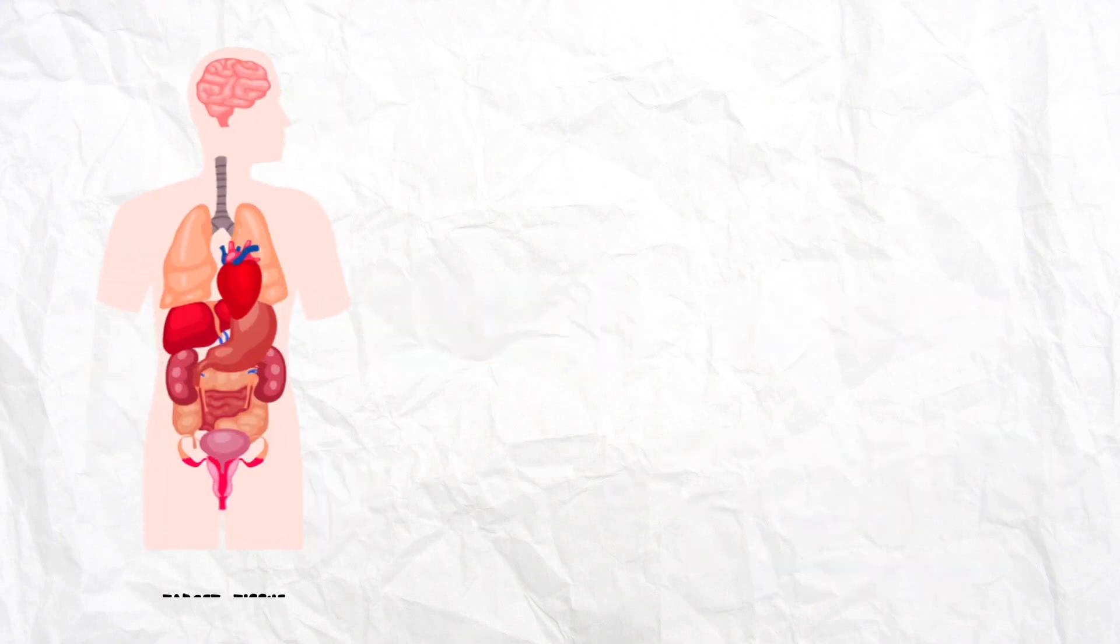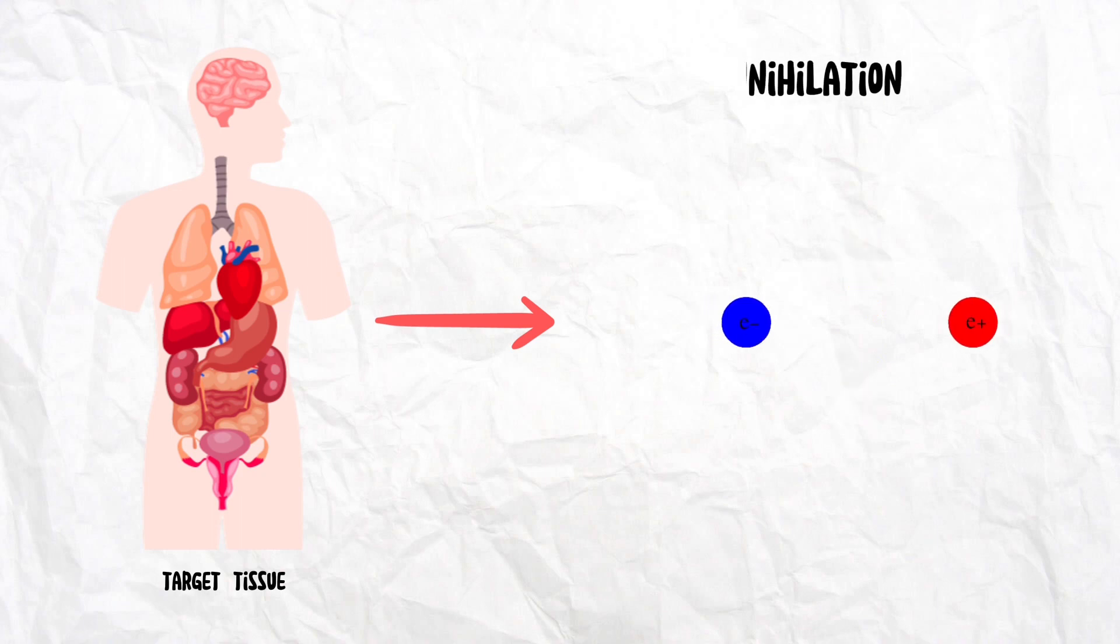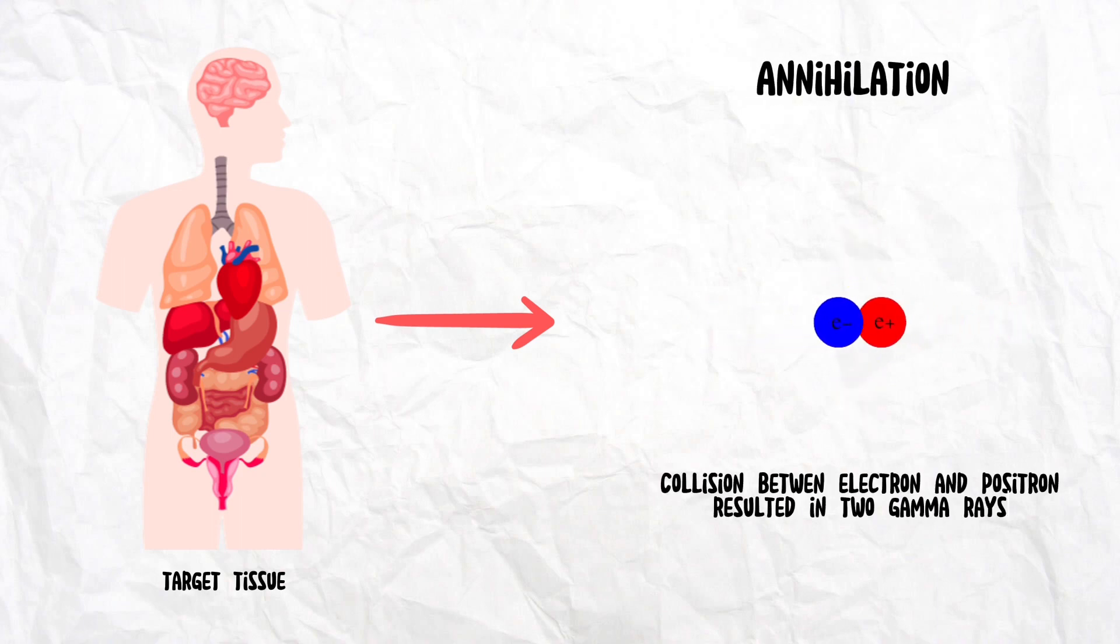Once inside the target tissue, the positron journey takes a dramatic turn. It encounters an ordinary electron, and their meeting sparks an event called annihilation. This collision annihilates both particles, converting their mass into pure energy in the form of two gamma rays flying off in opposite directions.